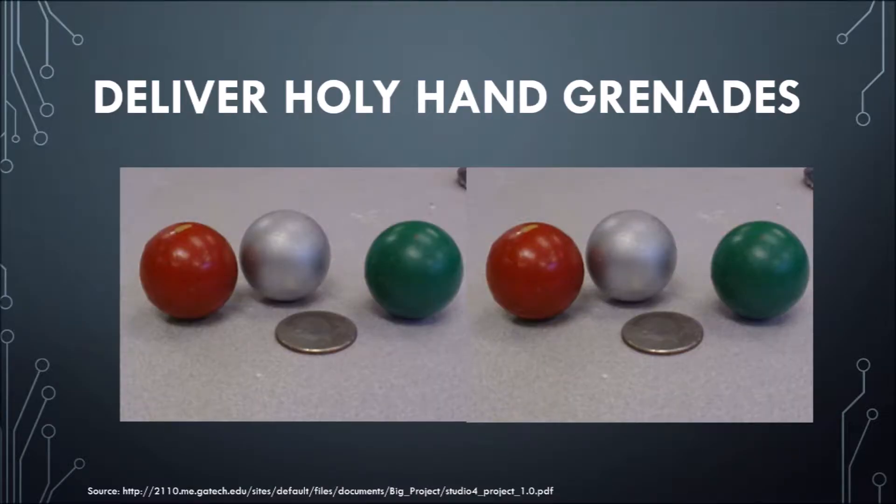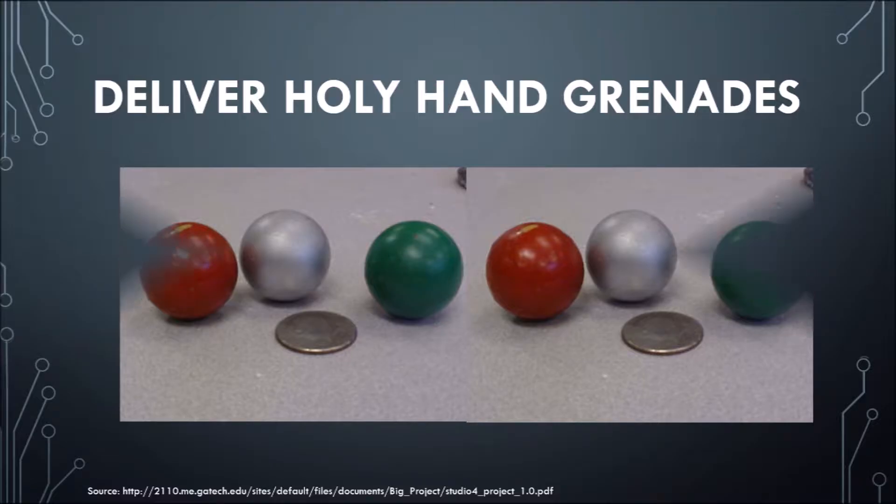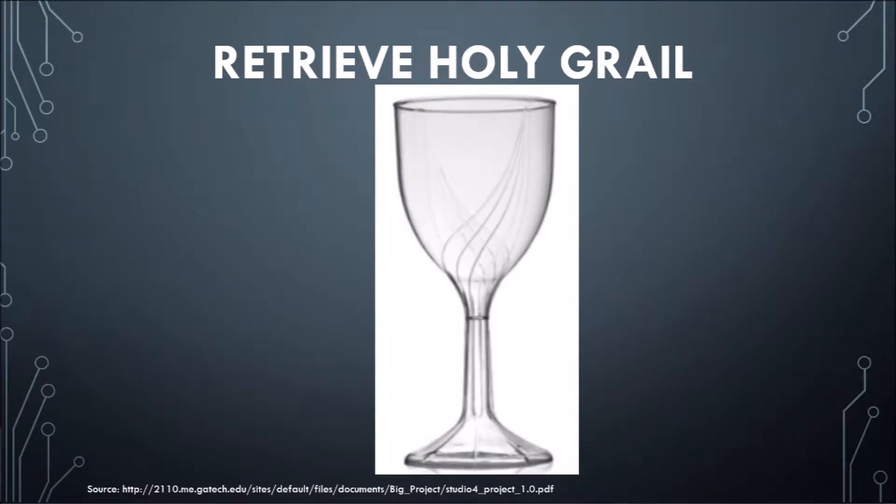Six holy hand grenades will be provided to the team. These ping-pong balls must be delivered to each of the four entrances to the Beast Slayer. The ultimate goal of the team is to retrieve the Holy Grail from the center of the Beast Slayer before another team does. The Holy Grail is worth an additional 30 points to the team's score.